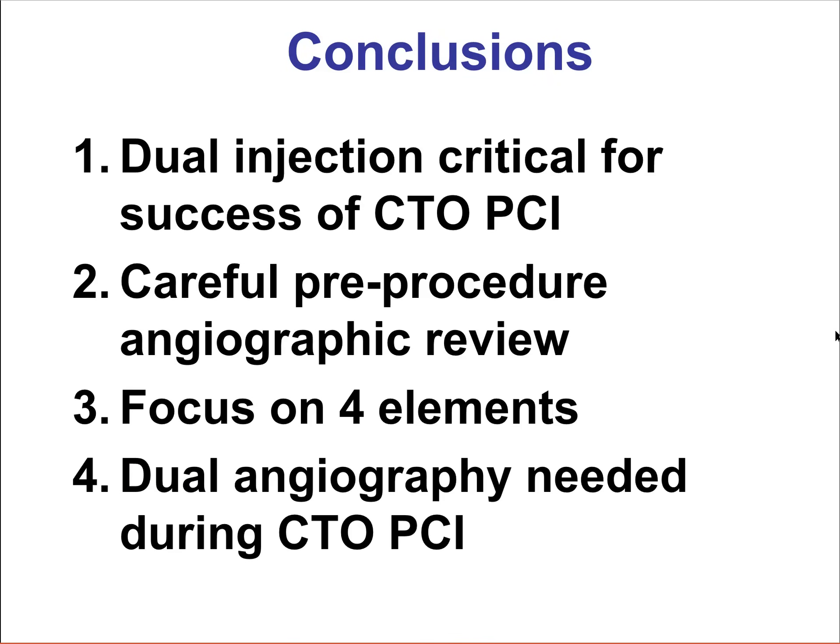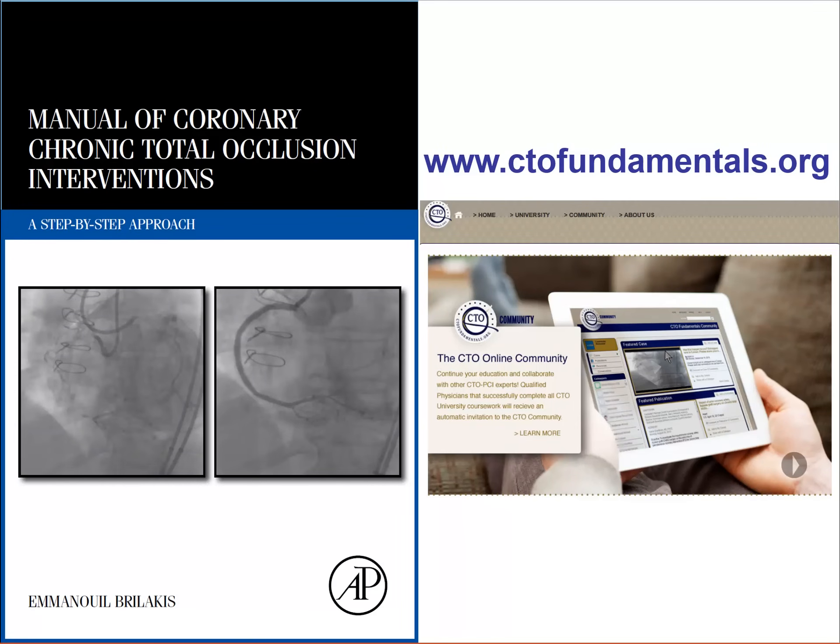In summary, dual injections are critical for the success of CTO interventions. It is very important to spend the time and effort to do a careful and thorough pre-procedure review of the angiogram. We should focus on the four elements: proximal cap, lesion length, distal cap, and collaterals. Finally, use dual angiography during intervention to guide our procedure. All this approach is detailed in the Manual of CTO Interventions, as well as in the basic talks from ctofundamentals.org. Thank you very much.